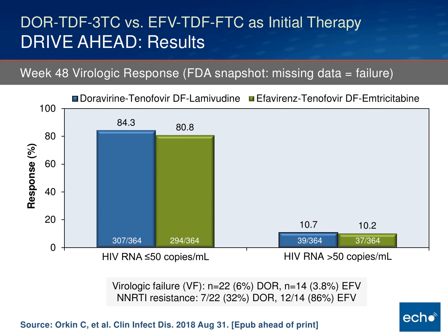That was not statistically different. Interestingly, of those who had virologic failure in the Doravirine arm, seven had NNRTI resistance mutations, and five of those seven had M184V as well. And 12 of the 14 in the Efavirenz arm had NNRTI resistance mutations. I highlight that because compared to trials of integrase inhibitors as initial therapy — especially Bictegravir and Dolutegravir — this is a notable difference. When individuals fail NNRTIs, including Doravirine, they are at risk of developing resistance to both NNRTIs and NRTIs, which does not seem to happen with Dolutegravir or Bictegravir.